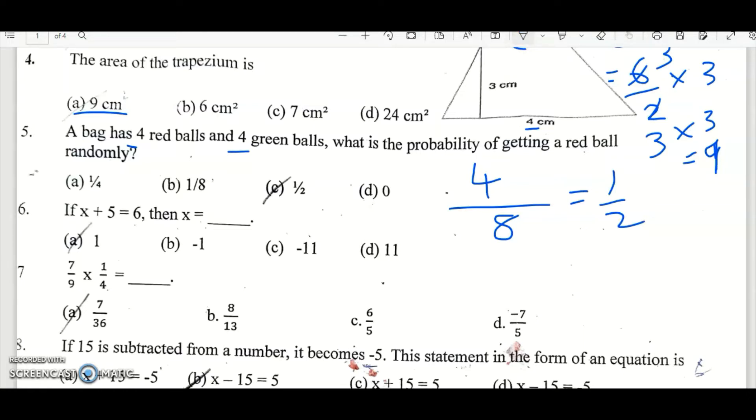Next one, if x plus 5 is equal to 6, then x equal to, let's solve here. If x plus 5 equal to 6, then x equal to 6 minus 5, that is equal to 1. So option A is the right answer.